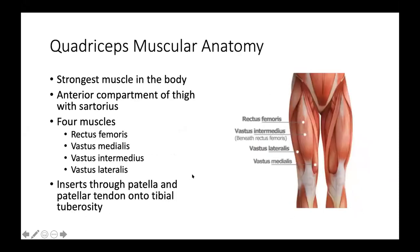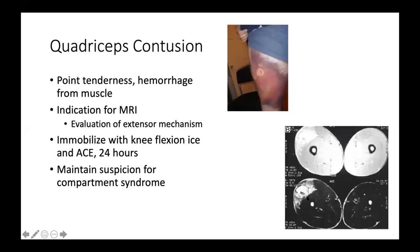The quadriceps is the strongest muscle unit in the body. It is in the anterior compartment of the thigh and contains the rectus femoris, vastus medialis, vastus intermedius, and vastus lateralis. These all insert through the patella into the tibial tuberosity on the shin bone. A quadriceps contusion involves bruising on the anterior thigh with point tenderness, caused by microhemorrhage of blood into the muscle due to injury.